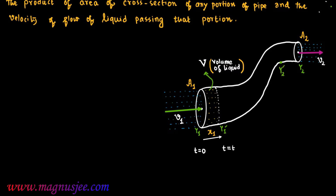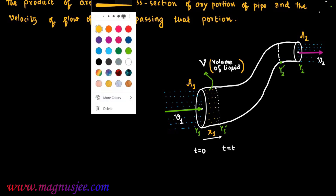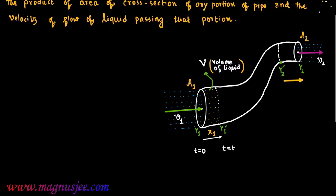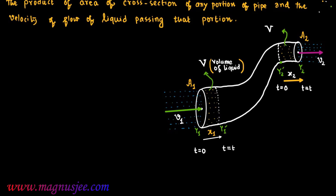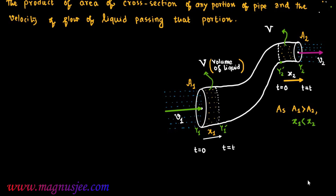Similarly, we can denote a portion at end Y2: the portion from Y2 prime to Y2, where liquid travels a distance X2 in time t seconds. At Y2 prime time is 0 seconds and at Y2 the time is t seconds. V is the volume of liquid of this portion of length X2 and area of cross-section A2. Since A1 is greater than A2, we can say that X1 is less than X2.